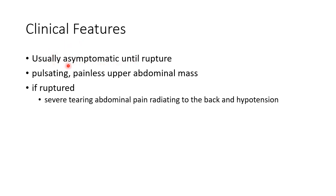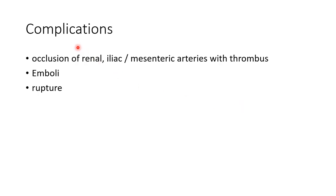Let us see about the clinical features of aneurysm. They are usually asymptomatic until they rupture. They may present as a pulsating, painless upper abdominal mass in case of abdominal aortic aneurysm. If ruptured, they will lead to severe tearing abdominal pain radiating to the back, and there will be hypotension.